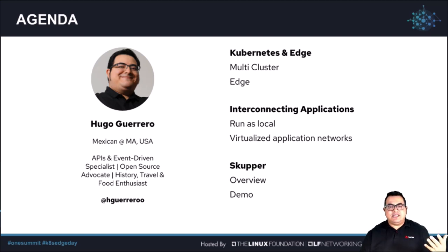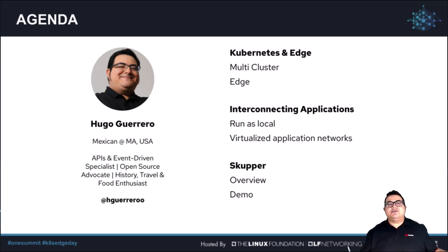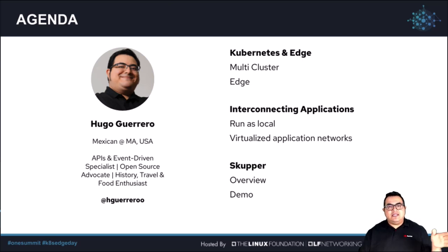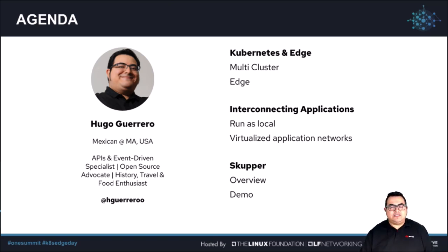A little bit more about myself: my name is Hugo. I'm Mexican, currently based in Massachusetts in the United States, and I am an open source advocate within Red Hat. I also consider myself a history, travel, and food enthusiast. I'll be in the chat to answer questions, but you can also contact me outside of this conference.